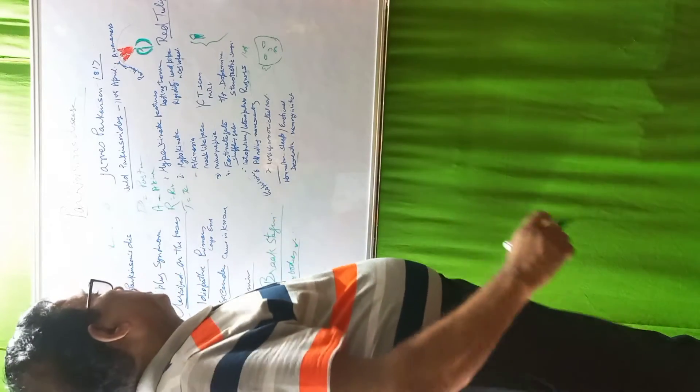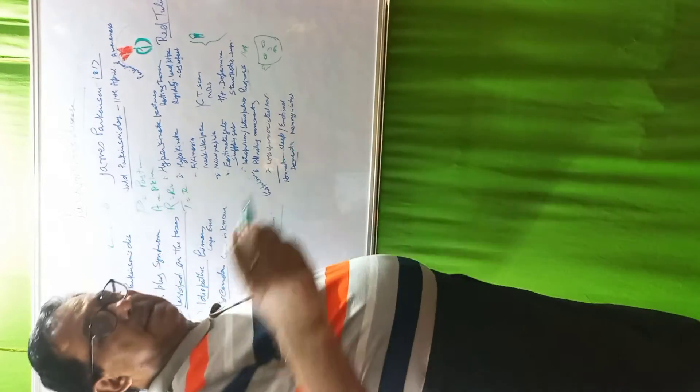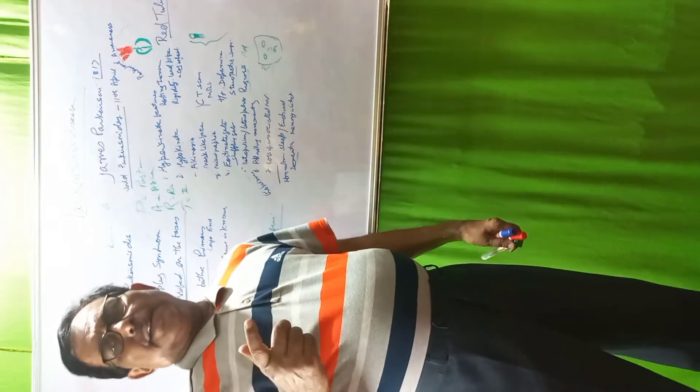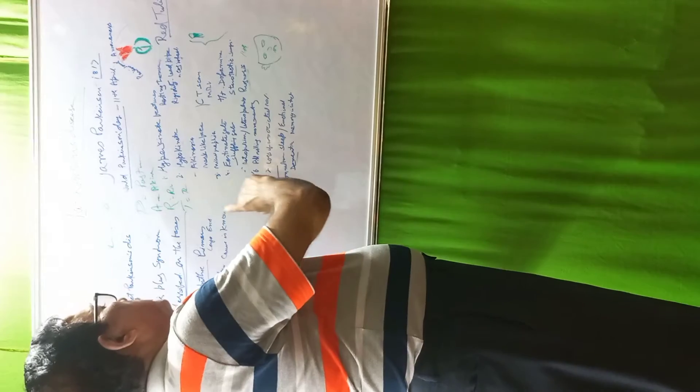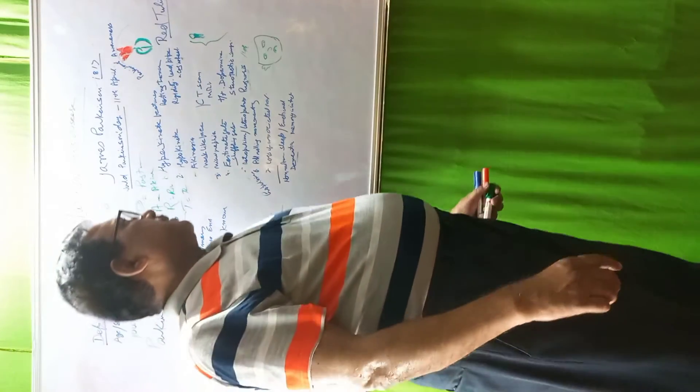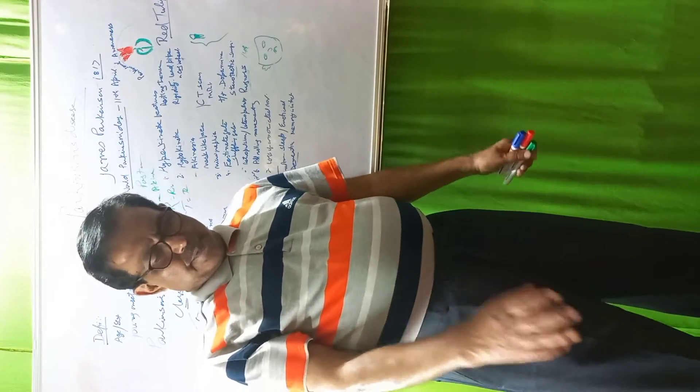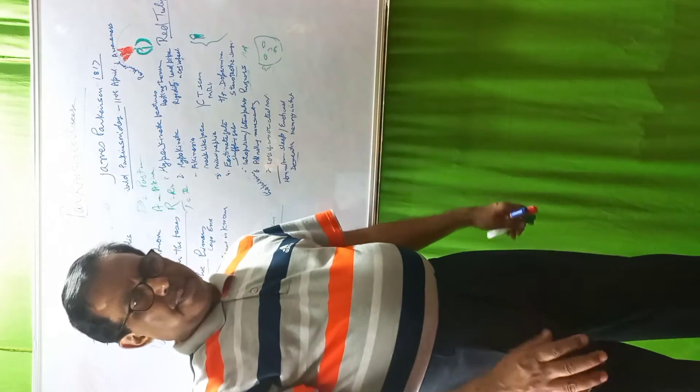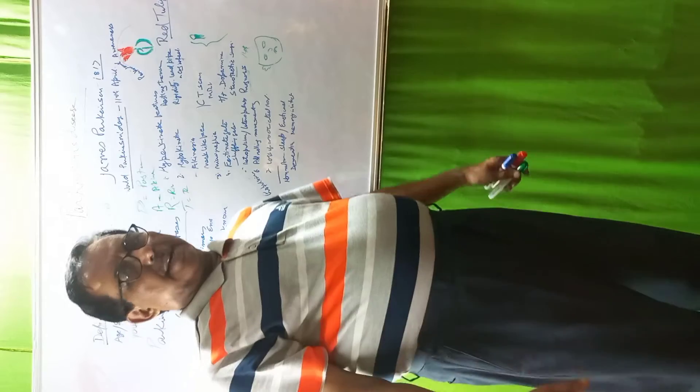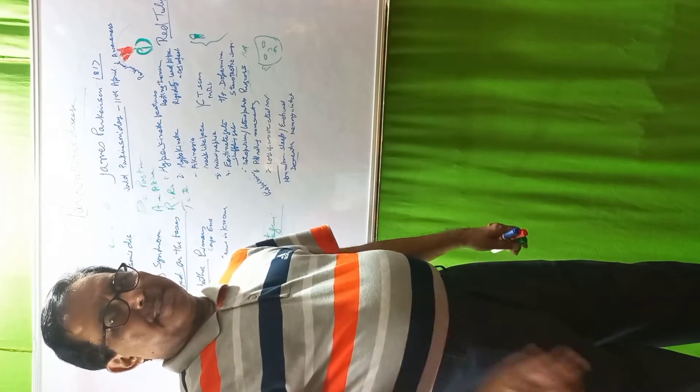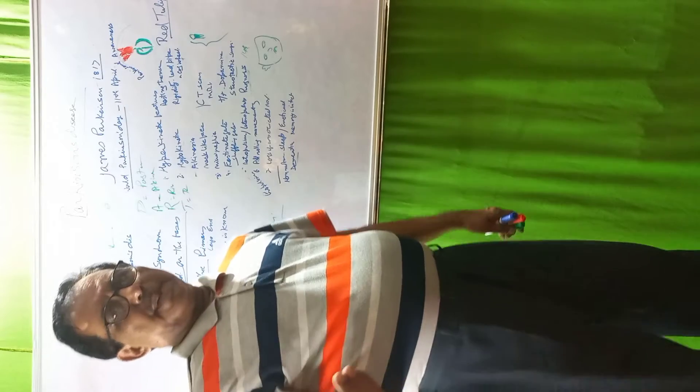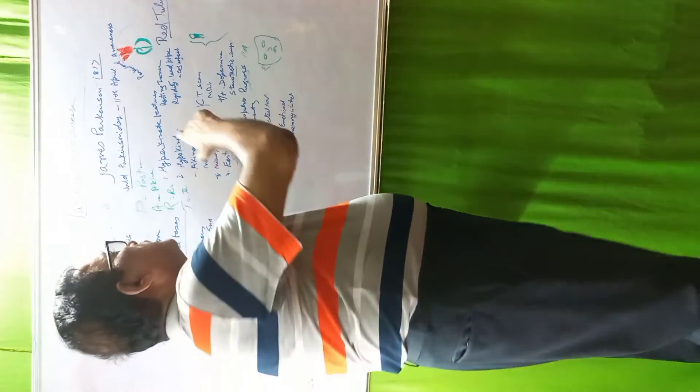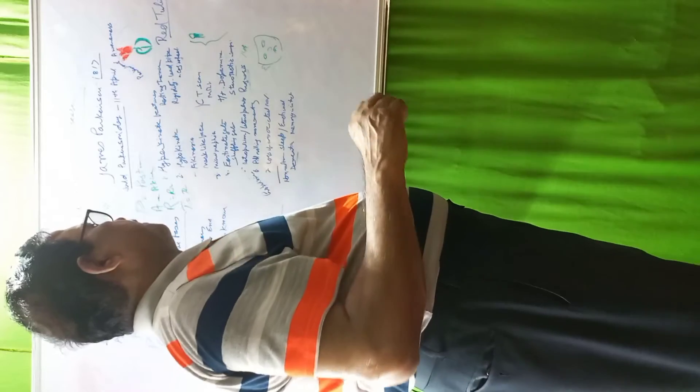The symptoms are divided into hyperkinetic and hypokinetic features. Hyperkinetic features: there is resting tremor. Resting tremor means when the patient is at rest, there is shaking or tremor occurring. This resting tremor is specific of Parkinson disease. In other conditions, there is intentional tremor in cerebellar disease or fine tremor in thyrotoxicosis.